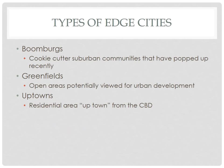Different types of edge cities include boomburbs — cookie-cutter suburban communities that grow very rapidly, like Henderson, Nevada — greenfields, which are open areas viewed for potential urban development, and uptowns, which are residential areas literally uptown from the central business district.